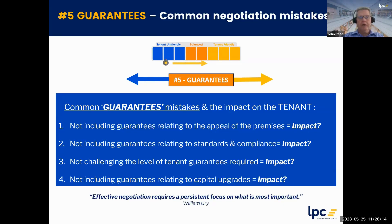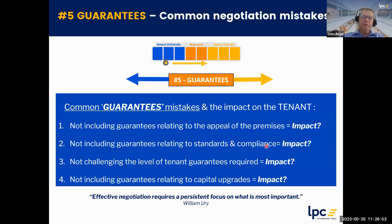Moving further to the right, you're trying to turn obligations into guarantees. Very similar to obligations, the mistakes include: first, not including guarantees relating to the appeal of the premises — just because everything looks good doesn't mean you shouldn't include them. Second, not including guarantees relating to standards and compliance — this is very relevant where ESG requirements, energy requirements, and carbon footprint standards are being introduced all the time.